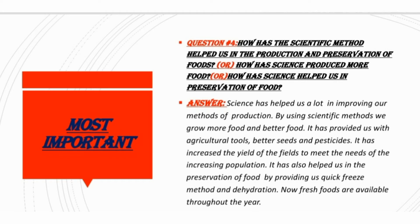Science has also helped us in the preservation of food by providing us the quick freeze method and dehydration — science نے کھانے کو محفوظ کرنے کے لیے یہ دو modern methods دیے ہیں: quick freeze method اور dehydration. Now fresh fruits are available throughout the year — اب ہمیں ہر طرح کا کھانا پورے سال میں کبھی بھی مل سکتا ہے — and this is all possible because of scientific methods.